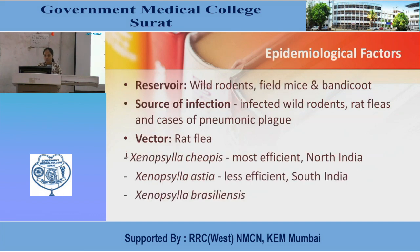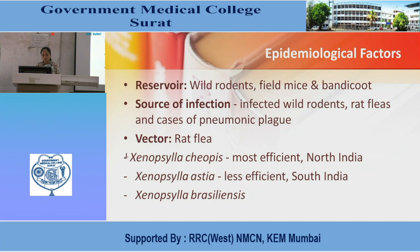Current global situation: over 5 years from 2004 to 2009, a total of 12,503 cases were reported with 843 deaths. Worldwide, plague is mainly confined to 16 countries of Africa, Asia, and America. Africa accounts for the highest number of cases, 97% worldwide. Epidemiological factors: reservoir is wild rodents, field mice, and bandicoot. Sources of infection are infected wild rodents, rat fleas, and cases of pneumonic plague. The vector is the rat flea. Vectors include Xenopsylla cheopis — most efficient in North India; Xenopsylla astia — less efficient in South India; and Xenopsylla brasiliensis as the third.